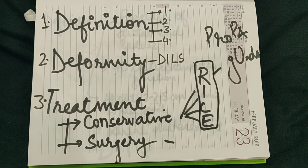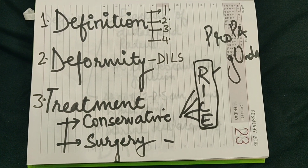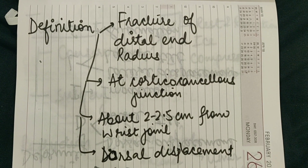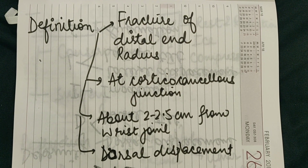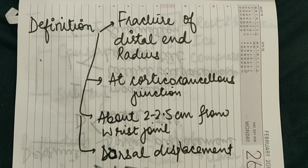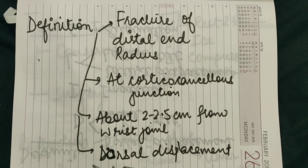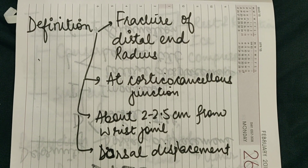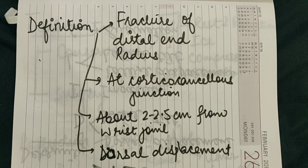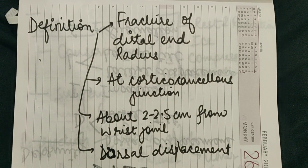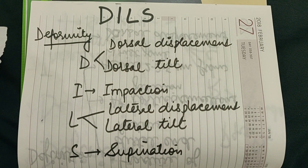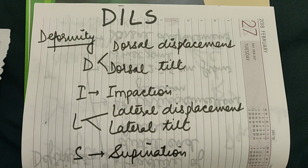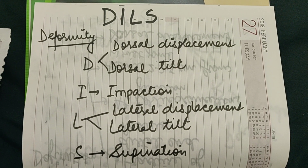In definition there are four points: Colles' fracture is the fracture of the distal end of radius at the cortico-cancellous junction, which is about 2 to 2.5 centimeters from the wrist joint, with dorsal displacement. Now coming to deformity, we use the mnemonic DILS: D-I-L-S.